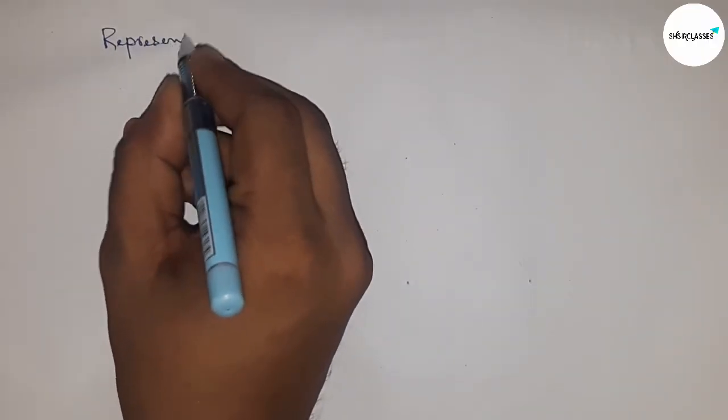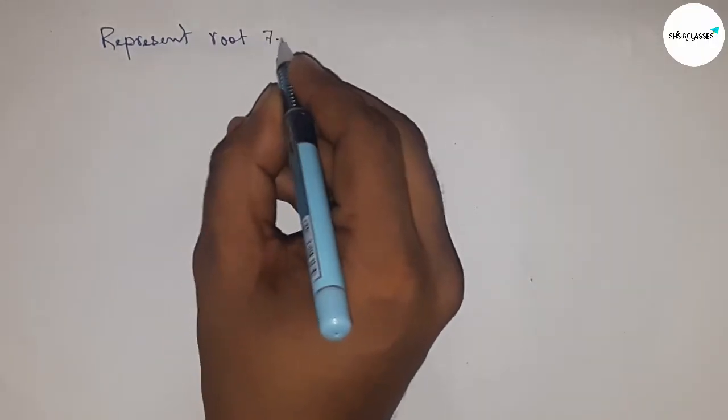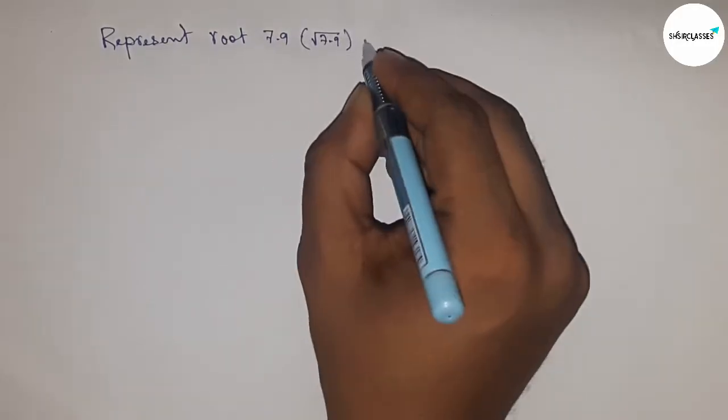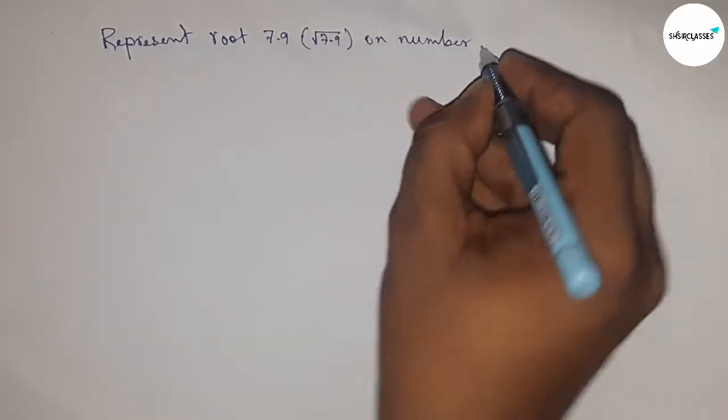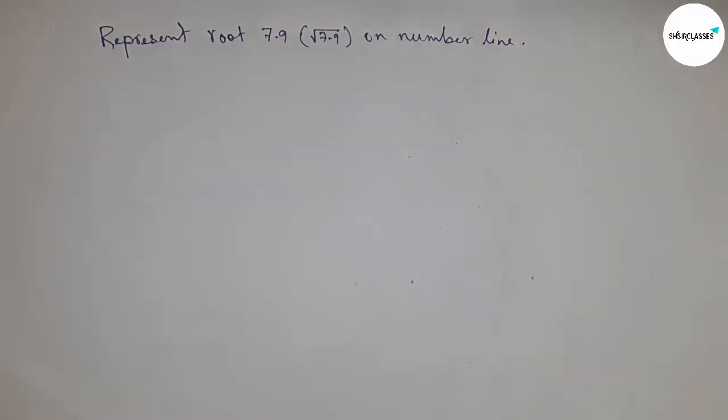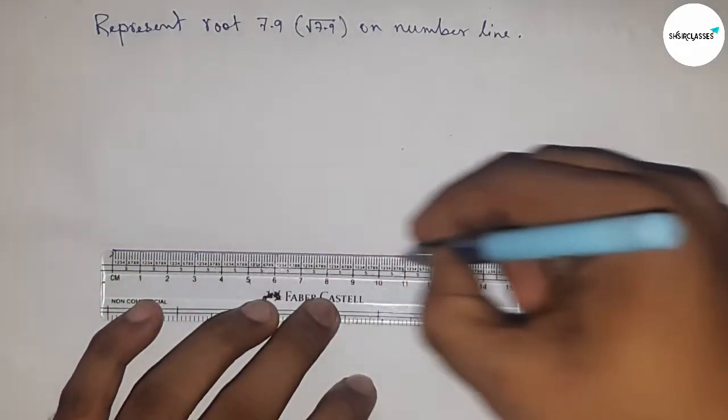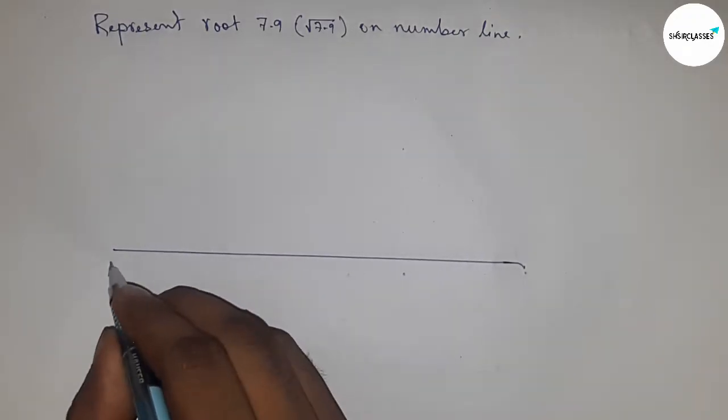Hi everyone, welcome to accessory classes. Today we're talking about how to represent root 7.9 on a number line. So let's start. First of all, draw a line of any length and this is the AX line.